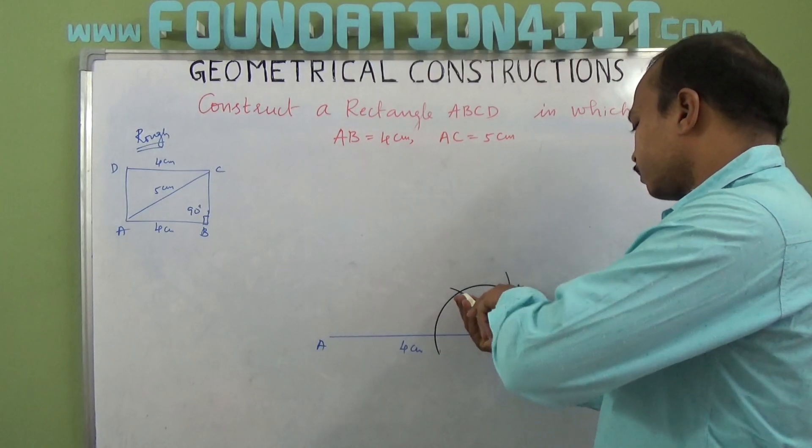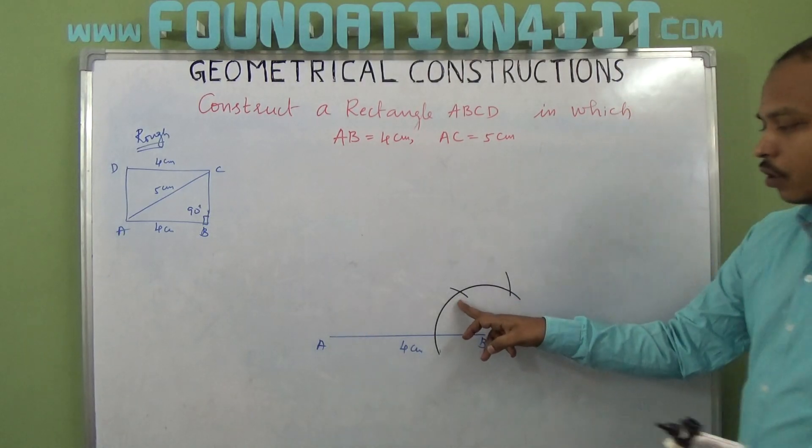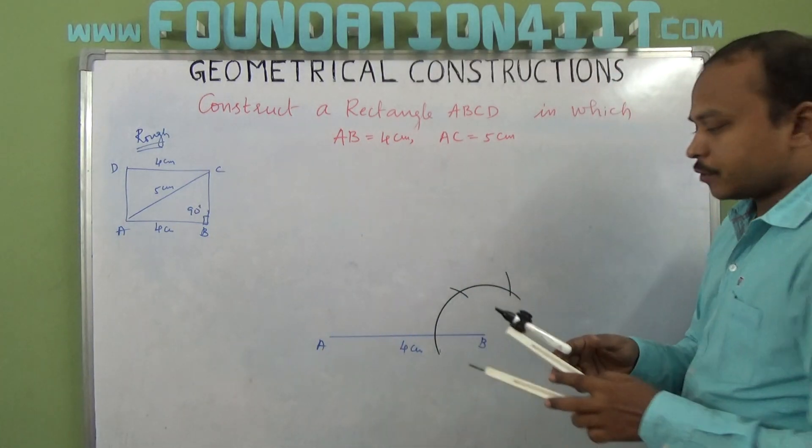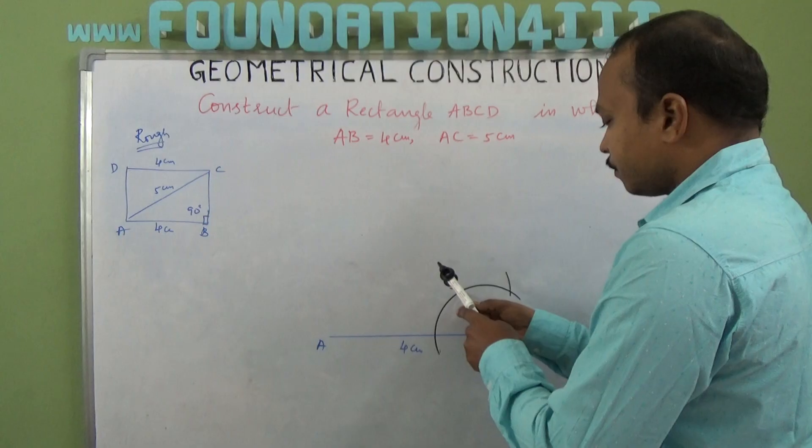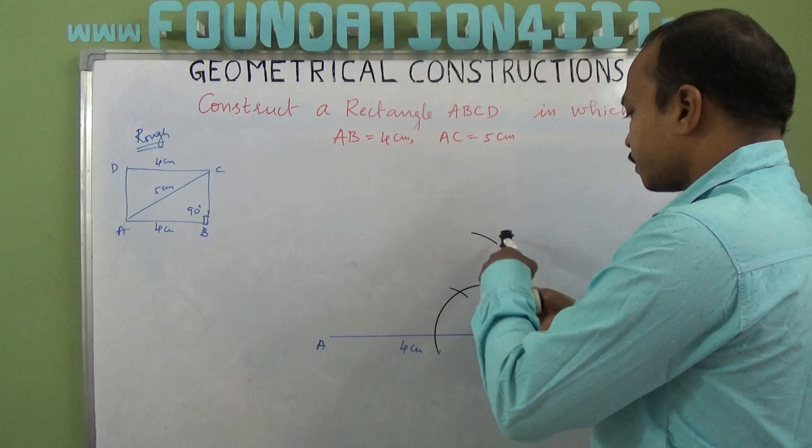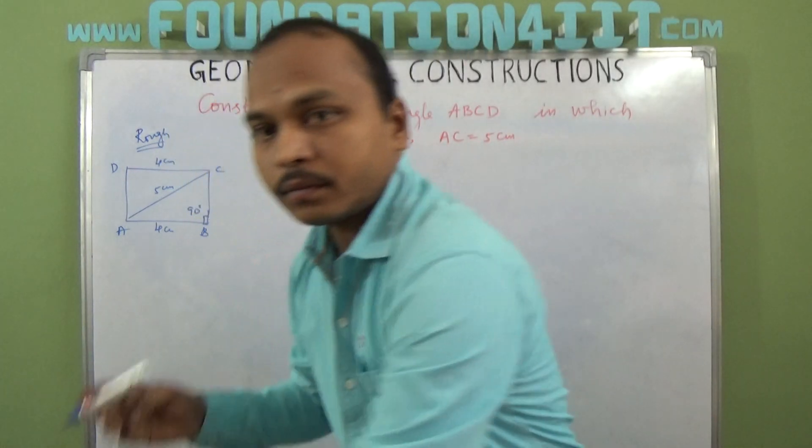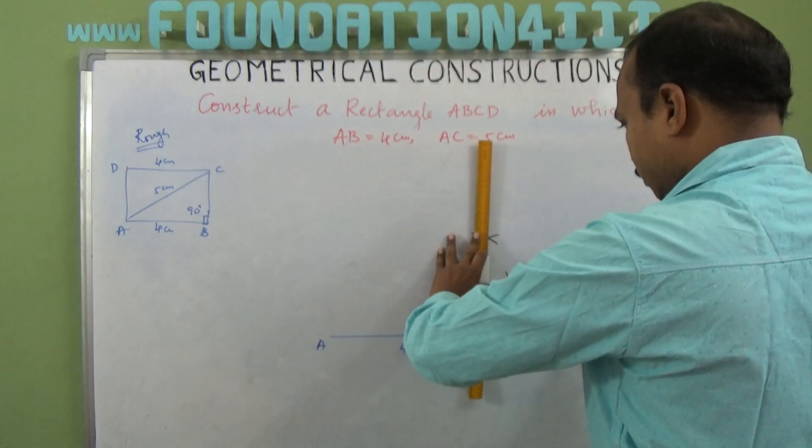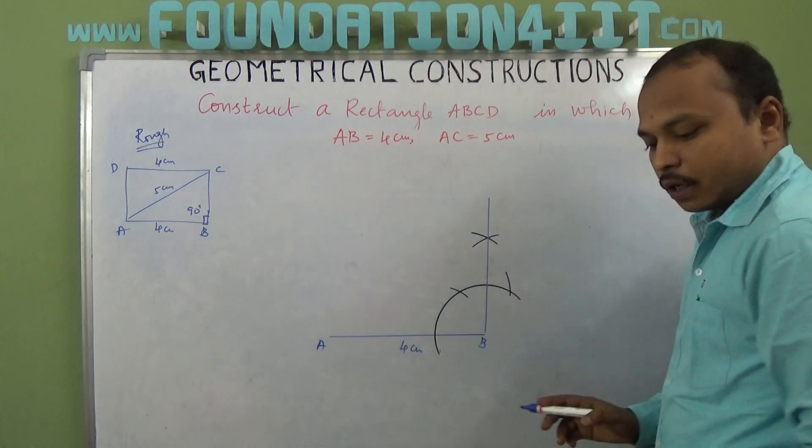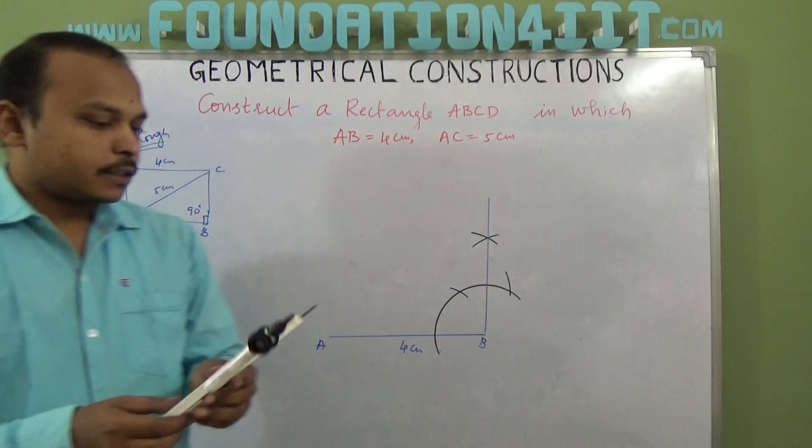Without changing this radius, from here cut two arcs because one is 60 and from 60 to one more 60 is 120. You extend this, this is 60 dot and 120 degree angle dot. Both if you bisect again 90 will come, so perpendicular line. From this point draw an arc. Now join that point.